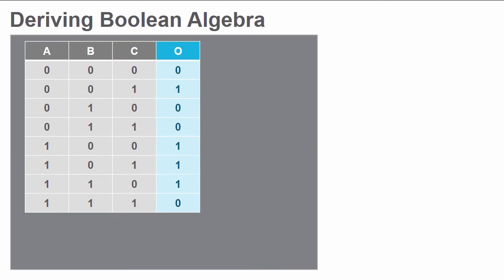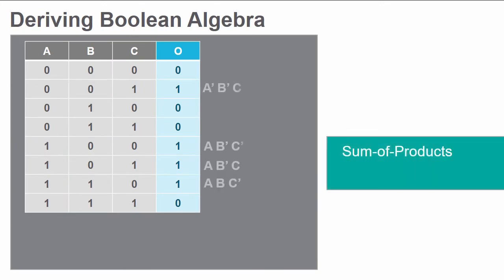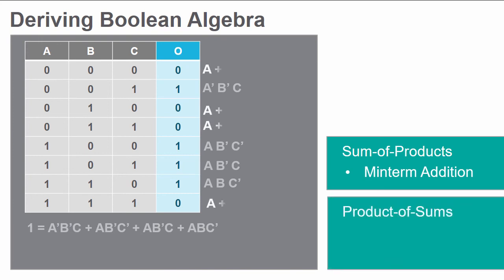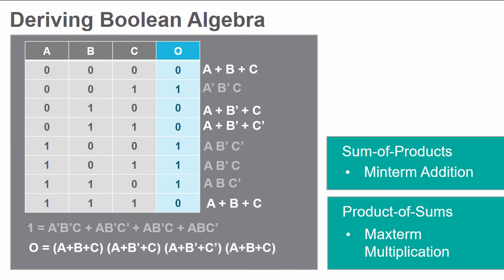There are two methods for deriving Boolean algebra expressions. The sum of products method adds up the min terms, a multiplicative combination of Boolean variables whose output equals 1. In contrast, the product of sums method multiplies the max terms, a summation of Boolean variables whose output equals 0.